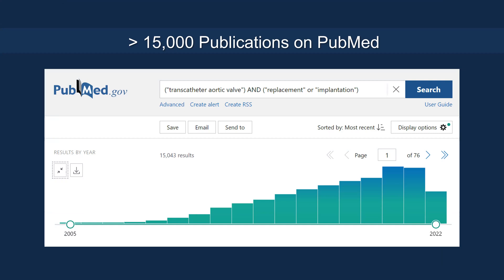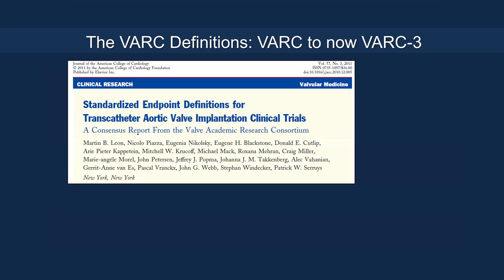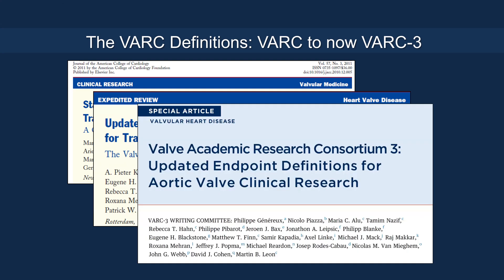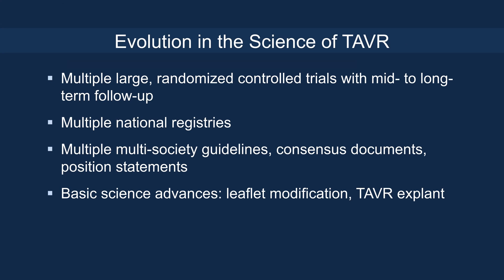The number of publications just keeps going up exponentially. At the same time, the definitions for evaluating endpoints in TAVR have also evolved, from the VARC paper first published in 2011, through VARC-2, and now VARC-3. The science of TAVR has evolved with multiple large randomized controlled trials with mid- to long-term follow-up, multiple national registries worldwide, multi-society guidelines, consensus statements, and position statements. Basic science has also advanced, including leaflet modification techniques.